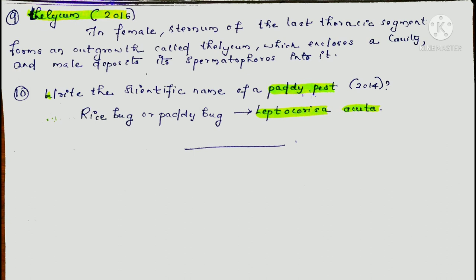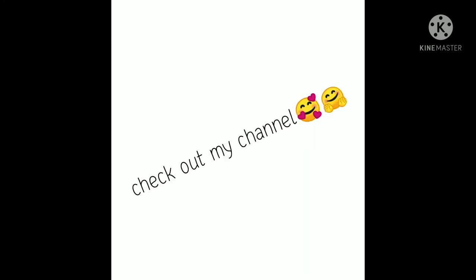The next question asks for the scientific name of a paddy pest, asked in 2014. The answer is the rice bug or paddy bug, whose scientific name is Leptocorisa acuta. We also discussed specific scientific names of crop pests in these one-word questions.